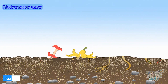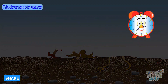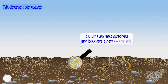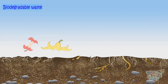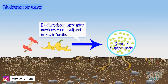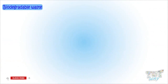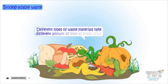For example, if you throw some food waste in the soil and let it stay there for a few days or weeks, you will not find it there anymore, as it ultimately gets dissolved and becomes part of the soil. It breaks down into simpler substances, and these simpler compounds are actually nutrients that add to the nutritive value of the soil and make the soil fertile.